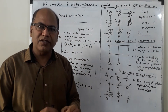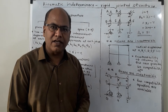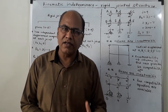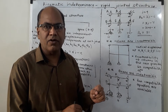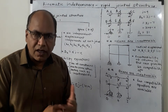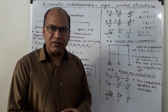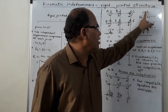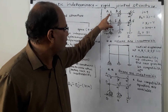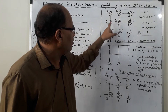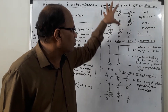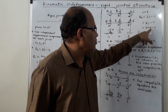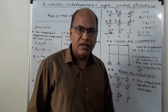The total number of displacement components is 21, and therefore the degree of kinematic indeterminacy dk equals 21. This is how you can get dk by counting the total number of independent displacement components. You can also use the formula: dk equals 3j minus e. Counting all joints including supports gives j equal to 9, so dk equals 3 times 9 minus 6, which equals 27 minus 6, giving dk equal to 21.